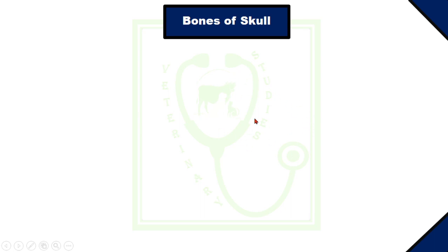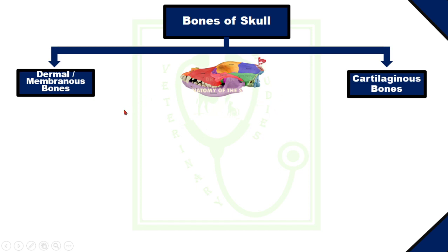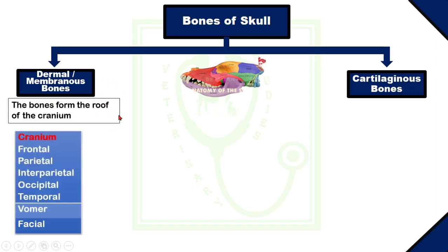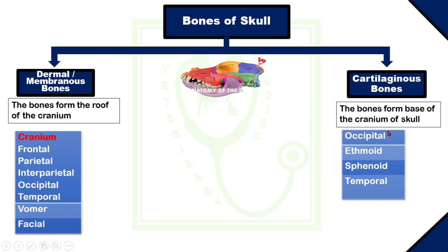Bones of the skull can also be divided into two types on the basis of their development: dermal bones and cartilaginous bones. The bones which are developed from membranes are called dermal or membranous bones, and the bones which are developed from cartilaginous tissue are called cartilaginous bones. Dermal bones form the roof of the cranium and include paired flat bones such as frontal, parietal, interparietal, occipital, temporal, and facial bones. Cartilaginous bones form the base of the cranium and consist of irregular bones like occipital, ethmoid, sphenoid, and temporal bones.